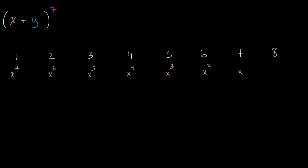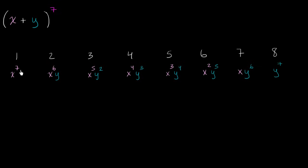Now let's think about y. This starts at y to the zero, which is just one, so I'm not going to write it. Then y to the first power, y squared, y to the third, y to the fourth, y to the fifth, y to the sixth, and y to the seventh. You can verify you got it right because for each term the exponents should add up to seven — for example, x to the first times y to the sixth adds up to seven.